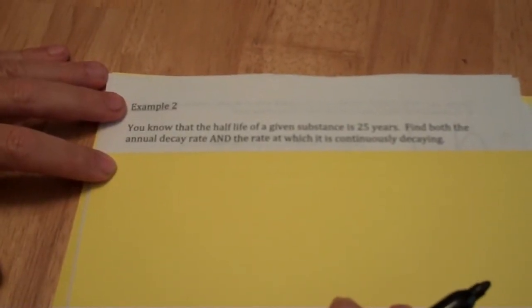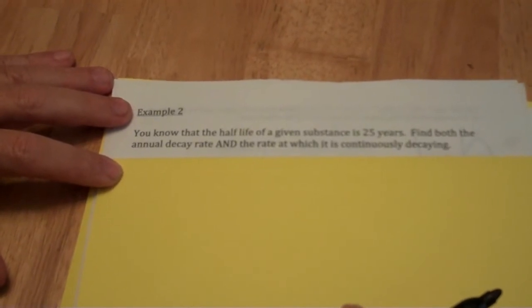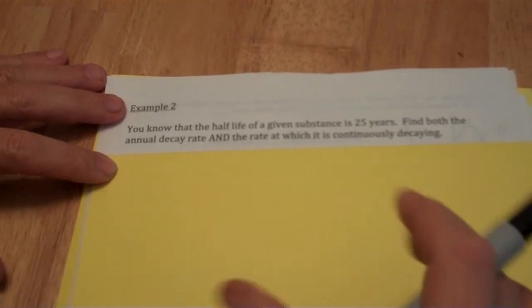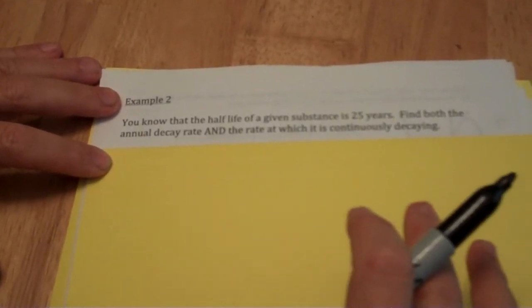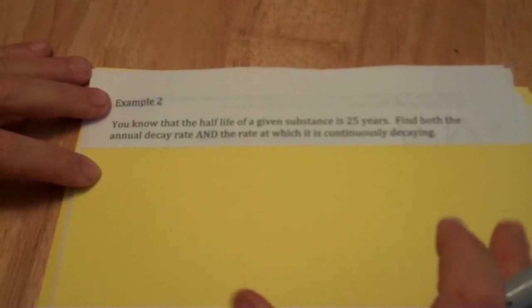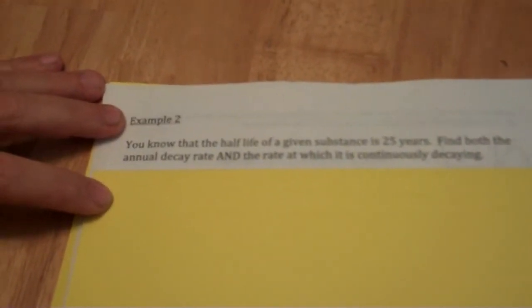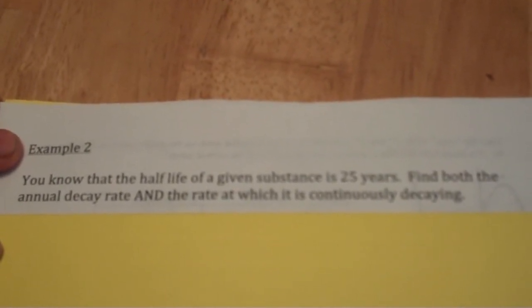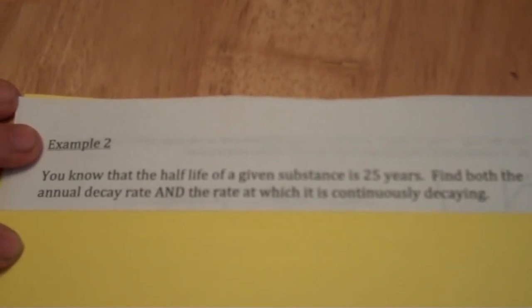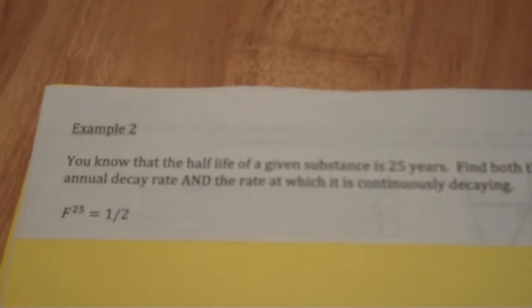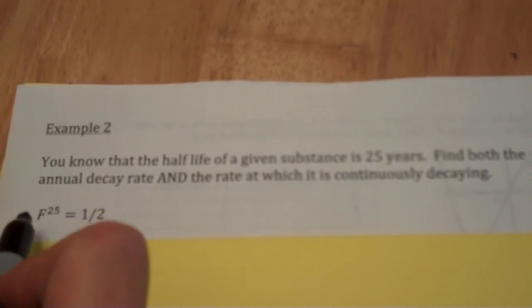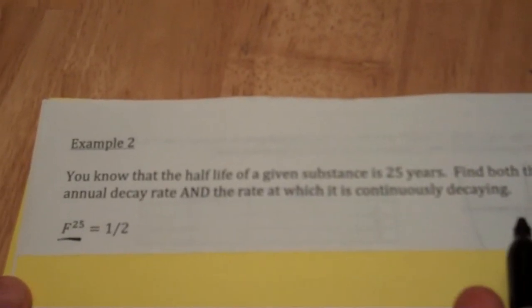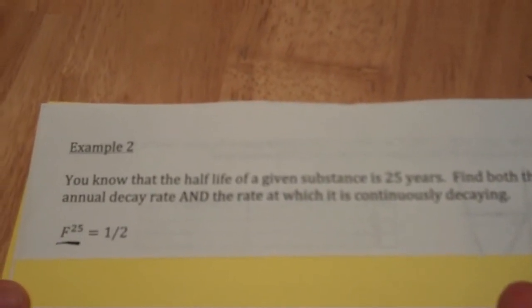I'd like to talk about a decay example. Decay usually happens continuously rather than annually or hourly. Let's look at this as a continuous example. I know the half-life of a given substance is 25 years. I want to find both the annual decay rate and the rate at which it is continuously decaying during that 25-year period. What I'm hoping you're seeing is that if I apply that decay factor 25 times, the amount that decayed by is one-half. That's what a half-life means.